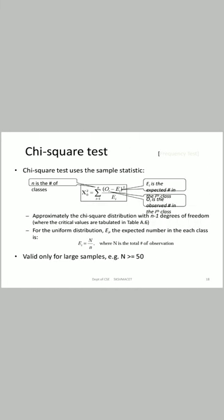The Chi-square test uses the sample statistic X0² = Σ(i=1 to n) [(Oi − Ei)² / Ei], where Oi is the observed count in the ith class and Ei is the expected count in the ith class, and n is the number of classes. This approximately follows a chi-square distribution with n−1 degrees of freedom; critical values are tabulated in table A.6. For a uniform distribution, the expected number in each class is Ei = N/n, where N is the total number of observations. This test is valid only for large samples, specifically when N ≥ 50.